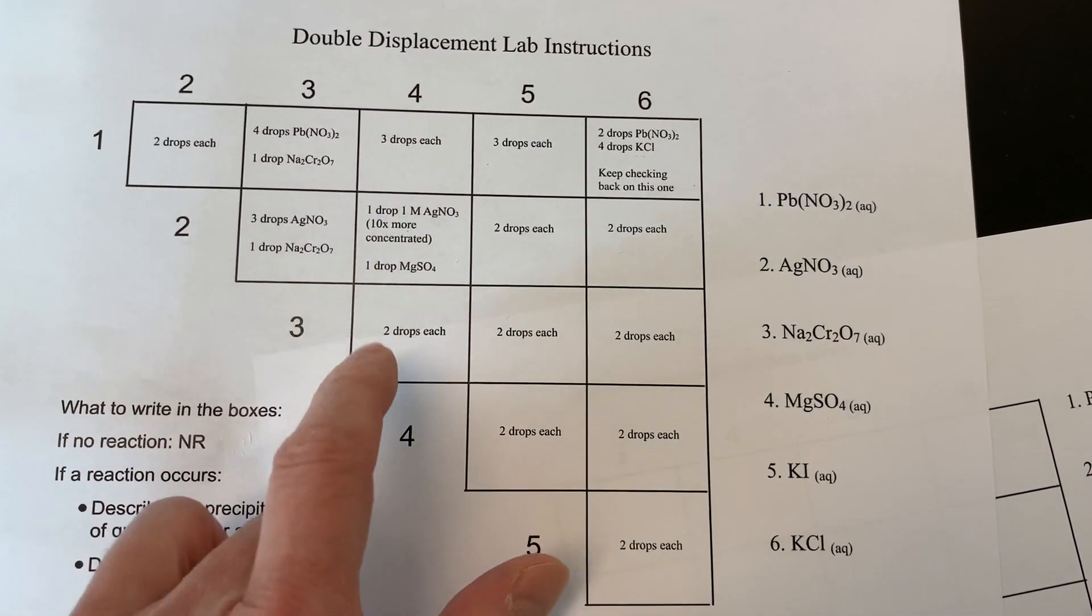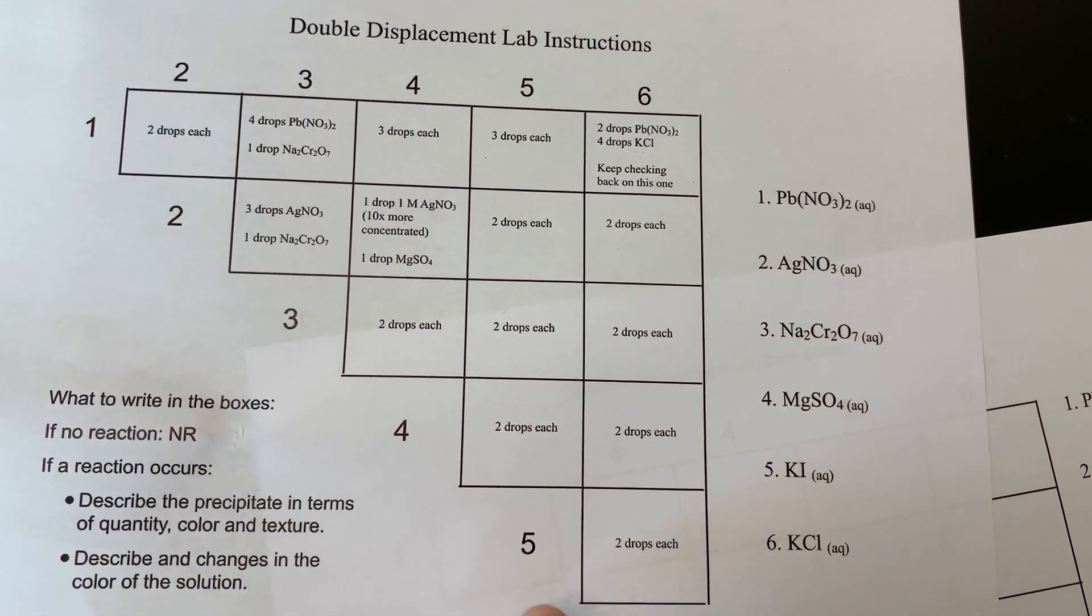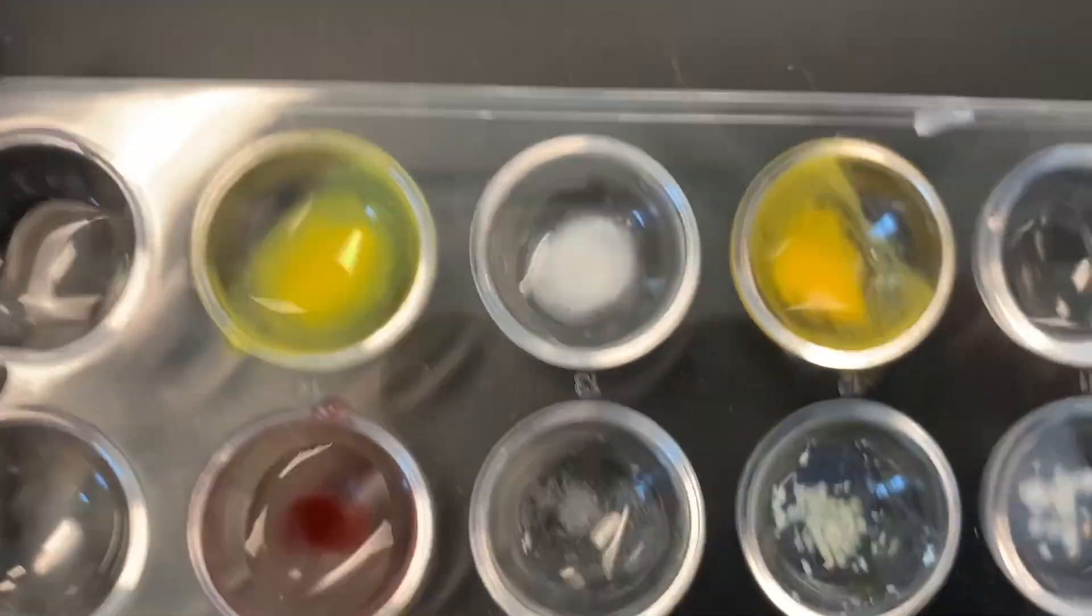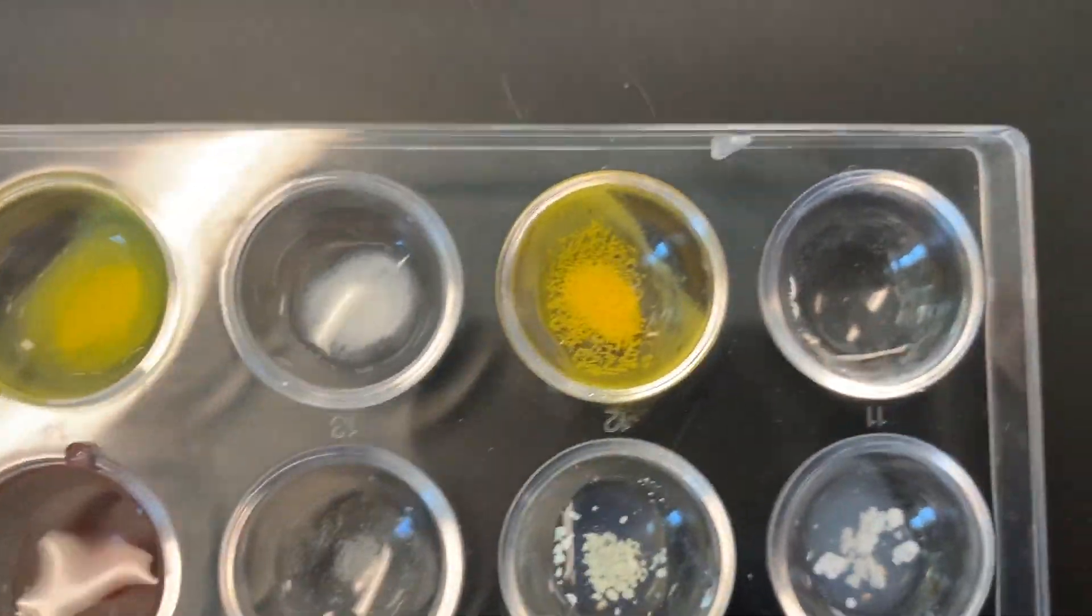To save some chemicals, I'll just say that none of these actually produce a reaction. Now use your data sheet to record your observations of the results of each reaction.